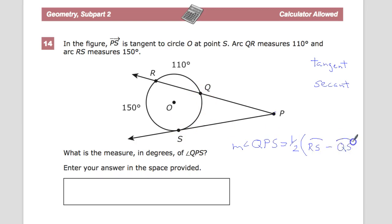So basically, I just want to find the difference between the two and then halve it. The problem is I don't know what QS is yet, but it's really easy to solve because it's a circle.